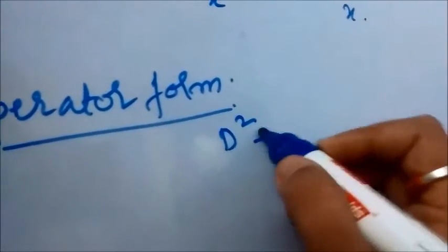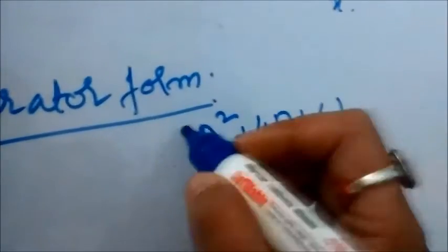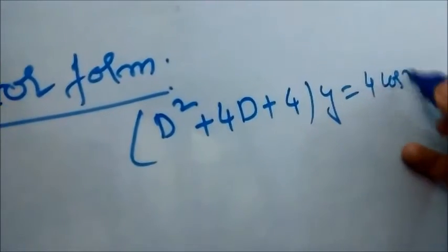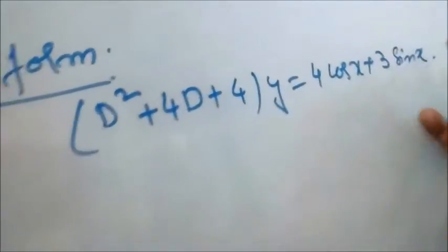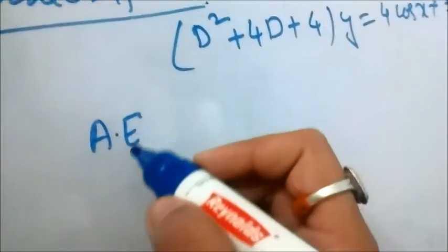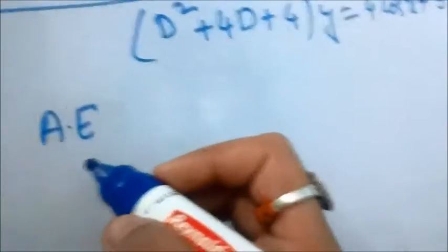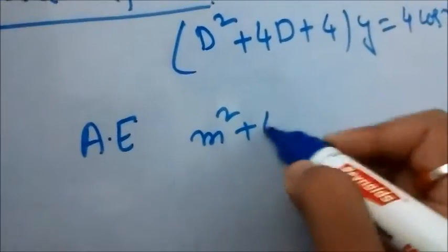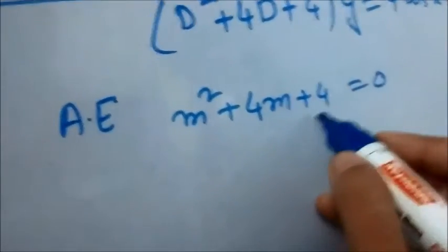In operator form: (D² + 4D + 4)y = 4cos(x) + 3sin(x). From the auxiliary equation, we are going to get the roots, and based on those roots we write the complementary function. Auxiliary equation: m² + 4m + 4 = 0.